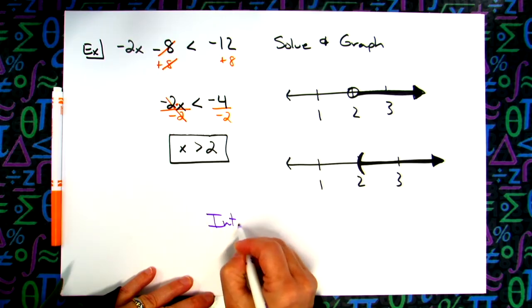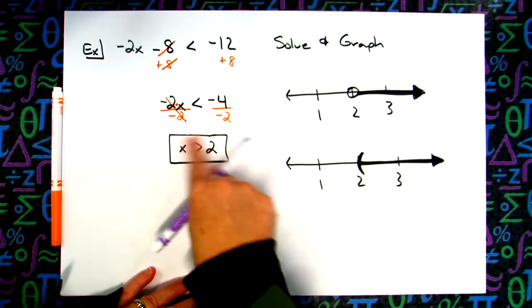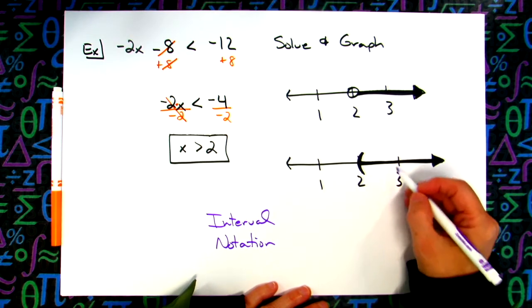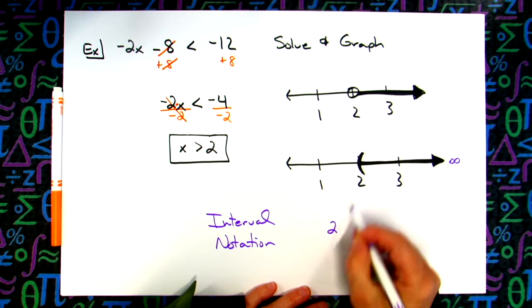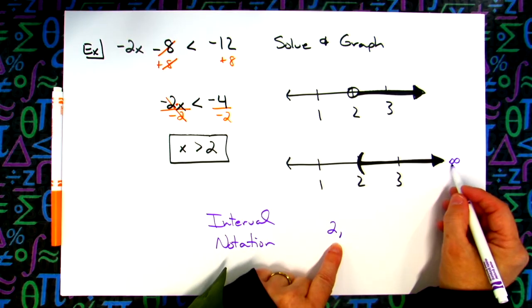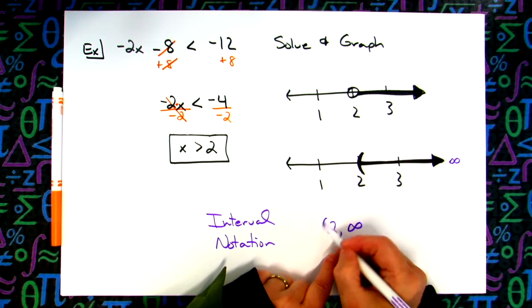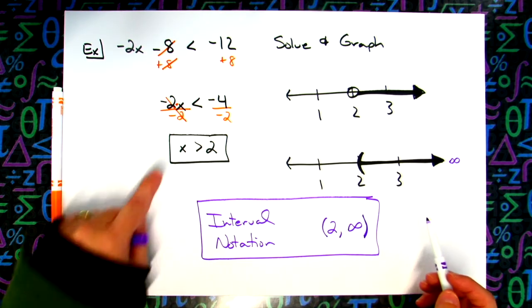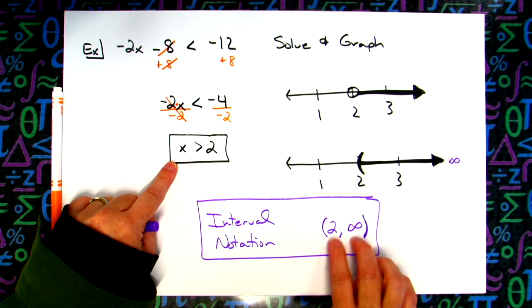There is something called interval notation. I can represent this answer by looking at the number line. As I go to the right, 3, 4, 5, 6, 7 — it goes all the way to infinity, because the number line goes on forever. So I take the 2, since that's part of my answer, and I put infinity since I've shaded all the way to the right forever. Curvy bracket on 2, and always a curvy bracket around infinity. So x is greater than 2 can also be written in interval notation with two curvy brackets around the 2 and infinity.